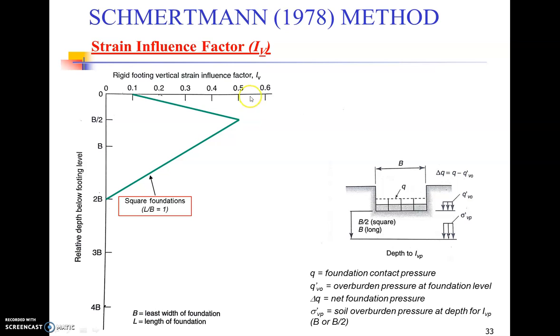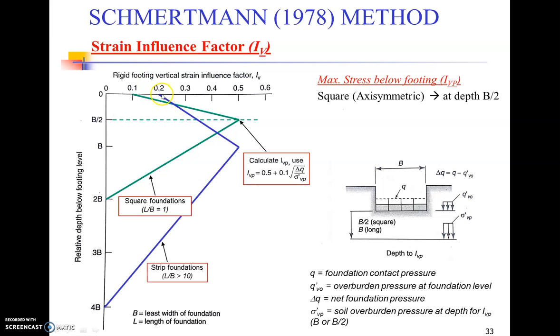Another one is plotted for the square foundations where L/B equals 1. For strip foundations, our plot will start from 0.2, reach 0.5 at depth equal to the base of the foundation B, and finish at 4 times width of the foundation for the strip footing where L/B is greater than 10. You can also determine the peak point using the simple expression 0.5 + 0.1 times Δq over σ'vp, or you may wish to recall the plotting of these two curves: one for the strip foundation in blue and the green one for the square foundation.